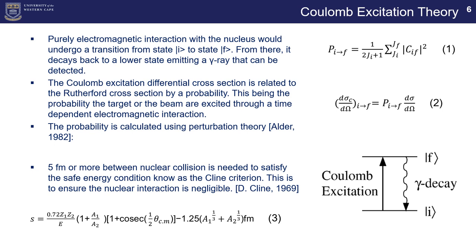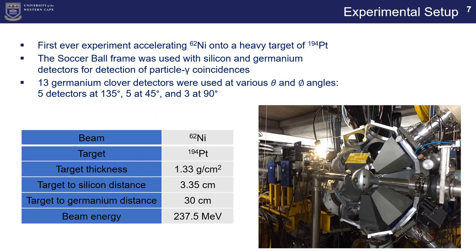All right, so one of the key factors in Coulomb excitation is the fact that no nuclear forces are invoked during the experiment, during Coulomb excitation. One of the things we need to keep in mind when we do Coulomb excitation is making sure that the nuclear force is not invoked, and the way we do this is by following the Cline criterion, which suggests that the nuclear collisions need to be at about five femtometers or more away from each other so that no nuclear forces are invoked. We follow the equation as suggested below in order to make sure that this may occur.